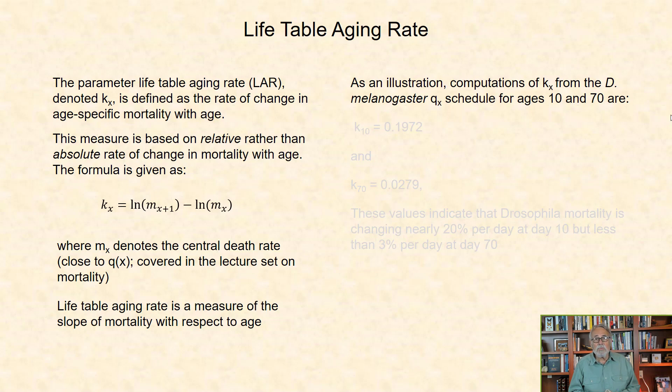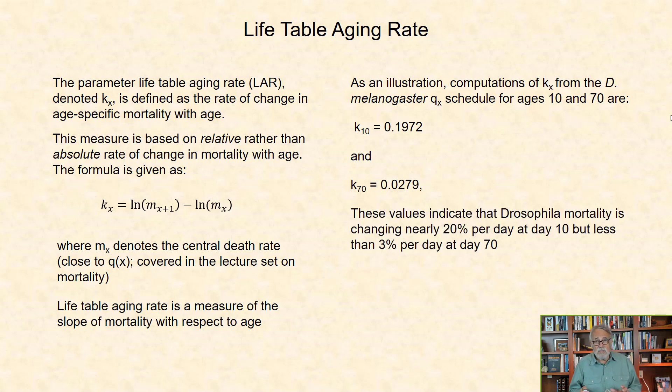Life table aging rate is a measure of the slope of mortality with respect to age. As an illustration, computations of Kx from Drosophila Qx schedule for ages 10 and 70 days are K10 equals 0.1972 and K70 equals 0.0279. These values indicate that Drosophila mortality was increasing by nearly 20% per day at day 10, but less than 3% per day at day 70.